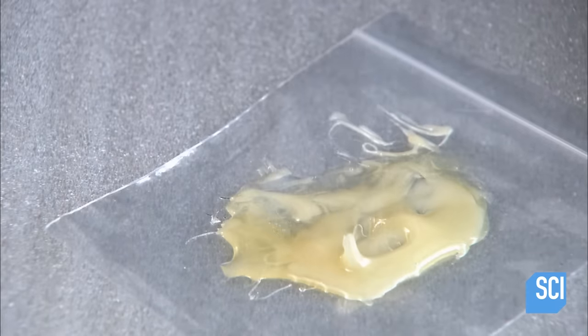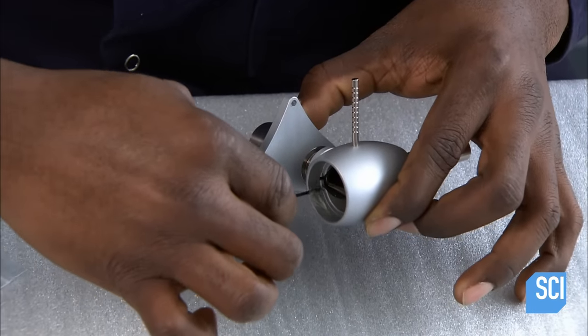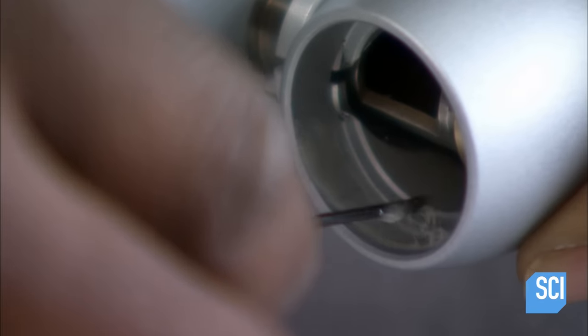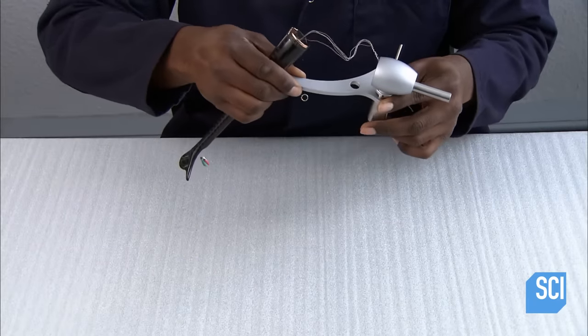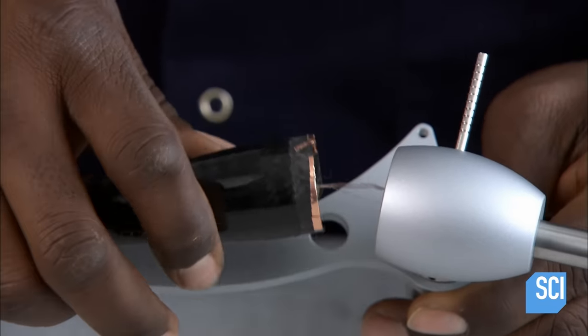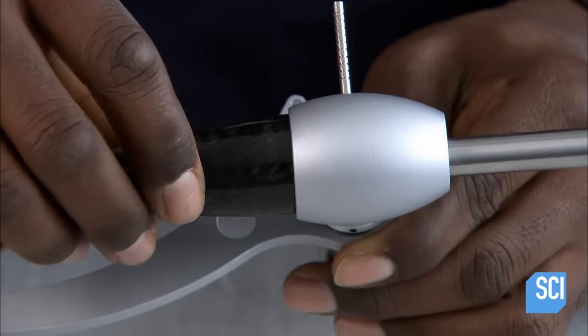He mixes epoxy resin that he then dabs around the inner rim of the bearing housing, which has by now been equipped with the bearing. He inserts the tonearm tube into the housing. The tube adheres to the glue-coated rim.